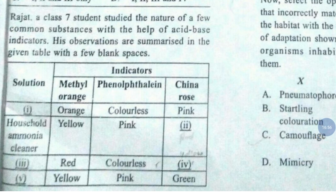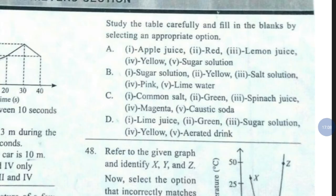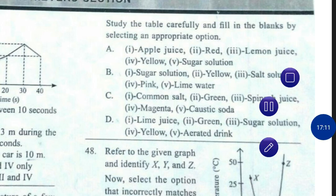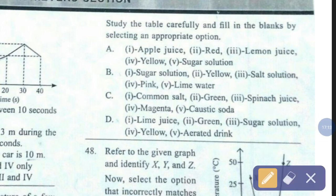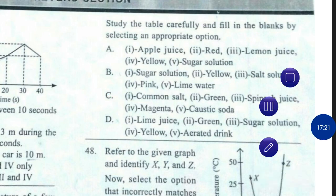Question number 47. Rajat, a class 7 student, studied the nature of a few common substances with the help of acid-base indicators. His observations are summarized in the given table with a few blank spaces. Fill in the blanks by selecting an appropriate option. The correct answer is option number C — first: common salt, second: green, third: spinach juice, fourth: magenta, fifth: caustic soda.